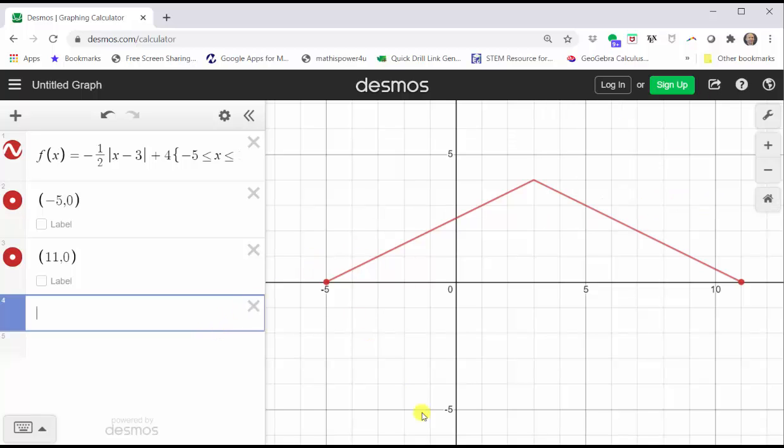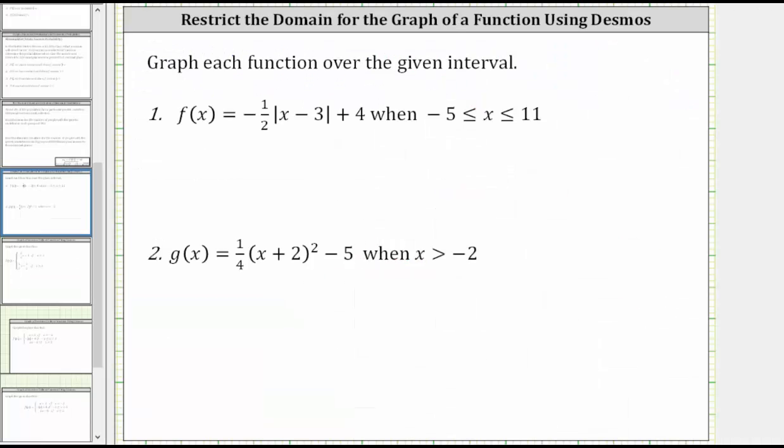And now let's graph our second function, which is g(x) equals one fourth times the quantity x plus two squared minus five when x is greater than negative two. Notice here x equals negative two is not in the restriction. For this graph, we'll have an open point as one endpoint.